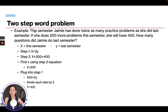Looking at step one — this semester Jamie has done twice as many practice problems as last semester — our equation is X equals 2Y, because this semester she did twice as many as last semester.